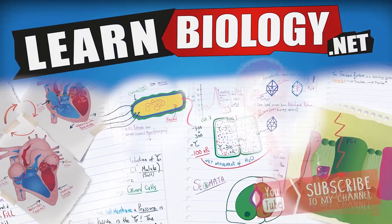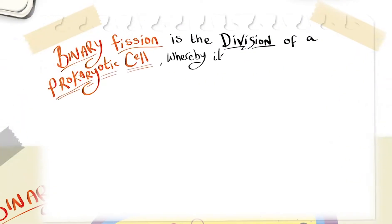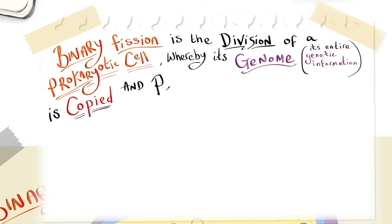Binary fission is the division of a prokaryotic cell whereby its genome, its entire genetic information, is copied and partitioned into two daughter cells.